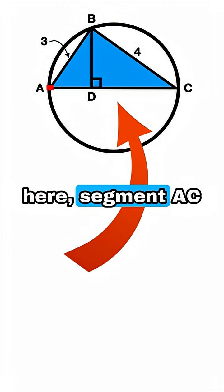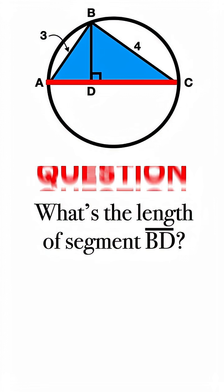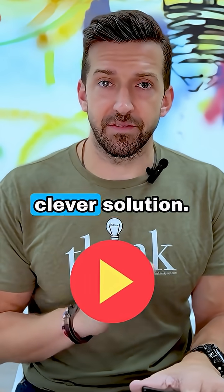In the diagram here, segment AC is a diameter of the circle. All the other lengths are given. So the question is, what's the length of segment BD? Pause the video, see if you can figure it out, and then resume when you're ready for the clever solution.